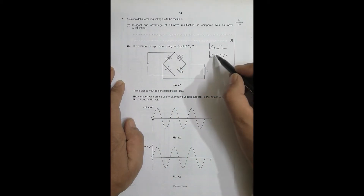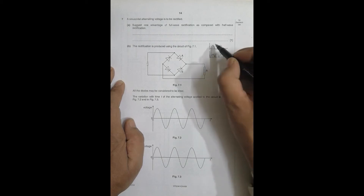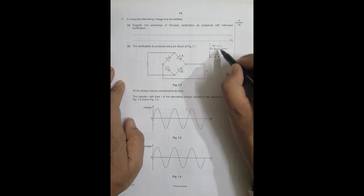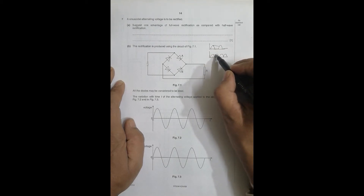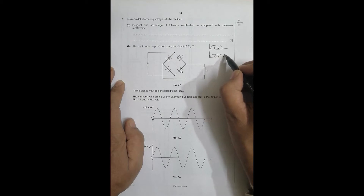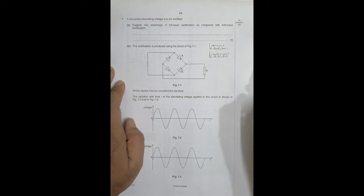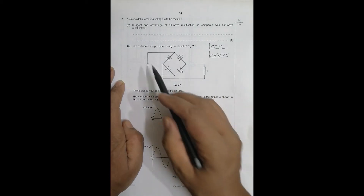Another advantage is that full-wave rectification gives a less ripple factor. The current decreases by a smaller amount each cycle, so the ripple factor is less in full-wave compared to half-wave rectification.